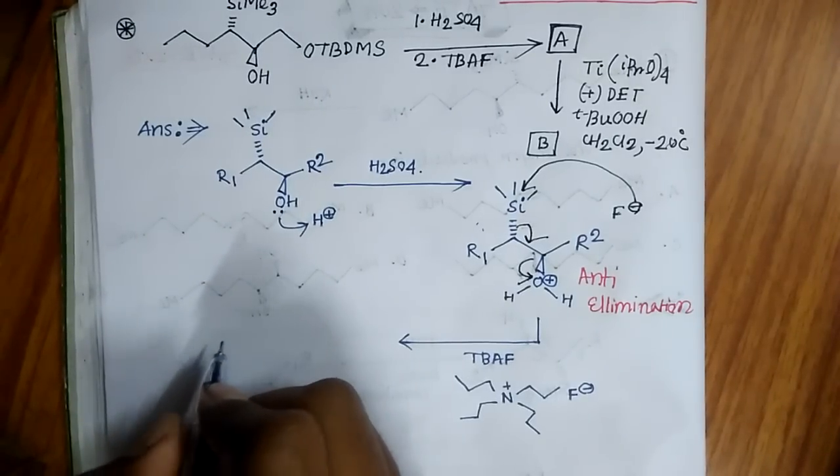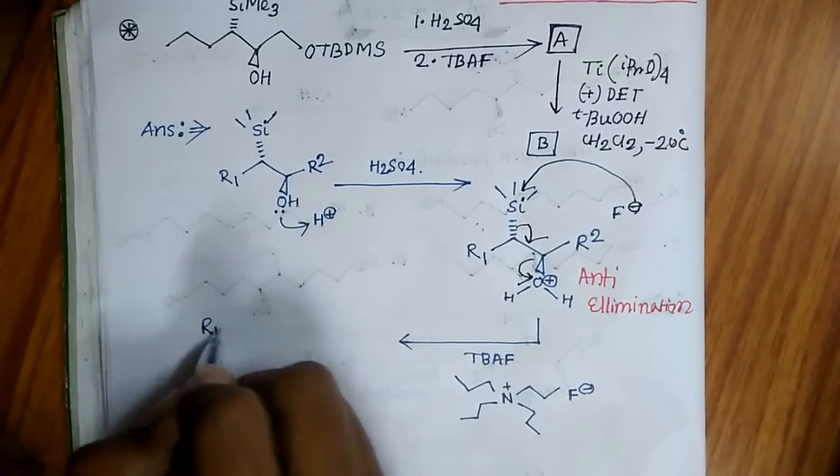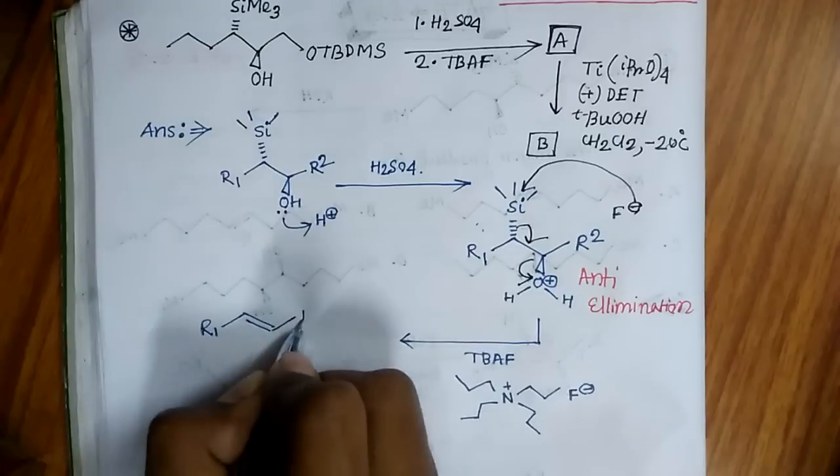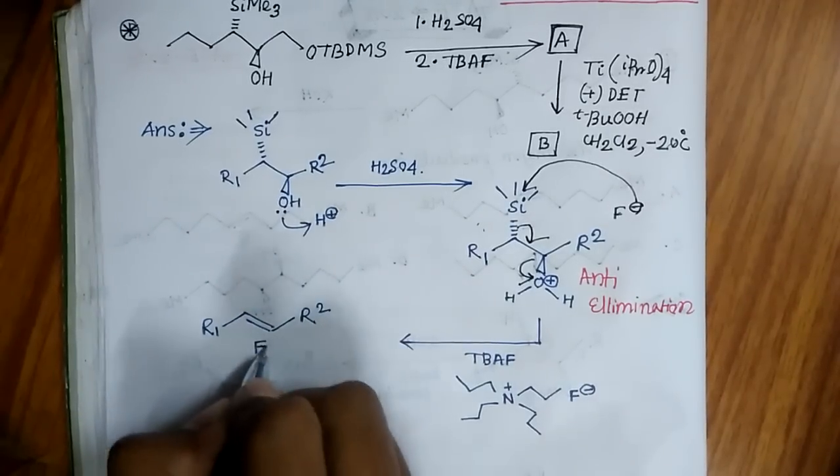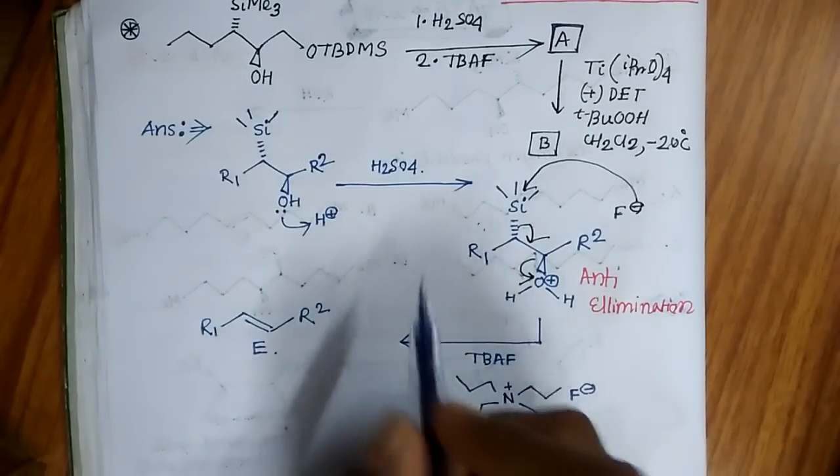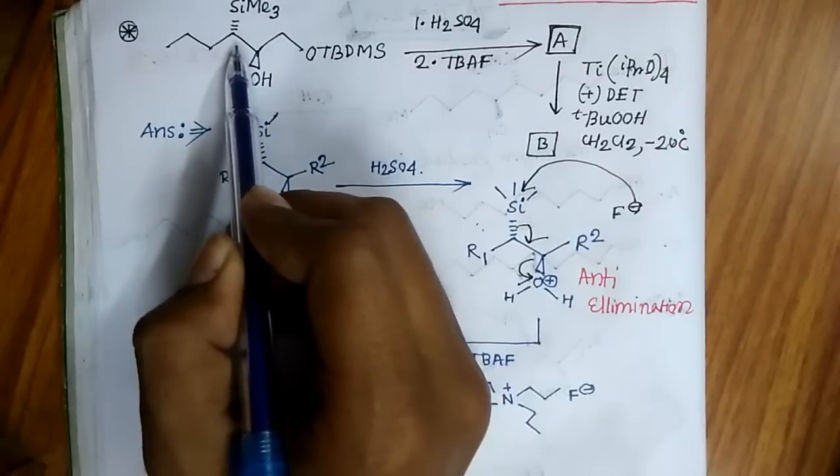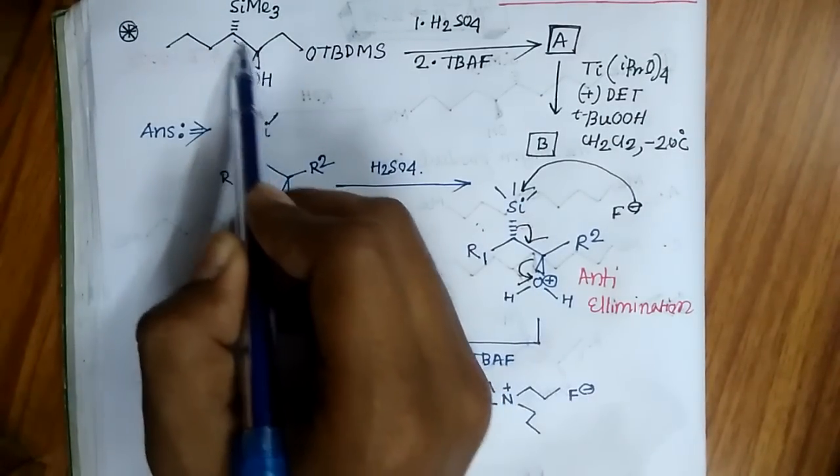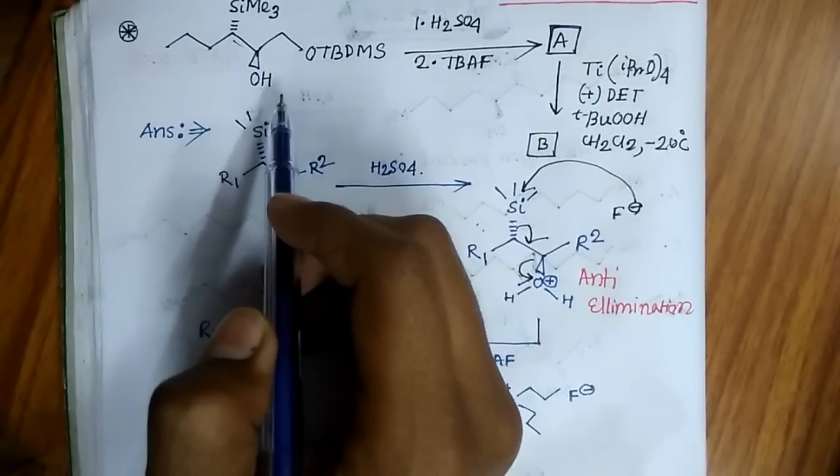In acidic medium, anti elimination is taking place which leads to the formation of the alkene which is E. So here the product will be formation of a double bond at this position.